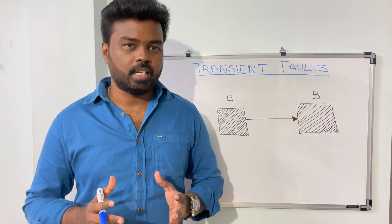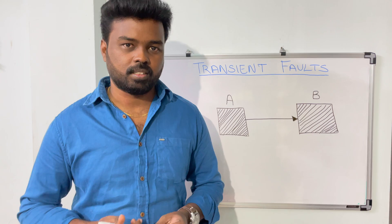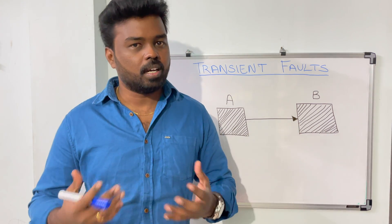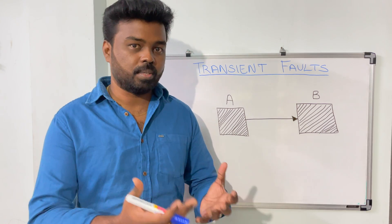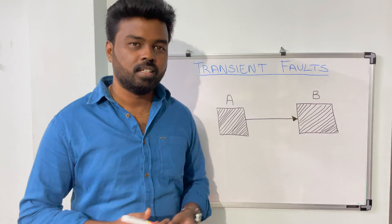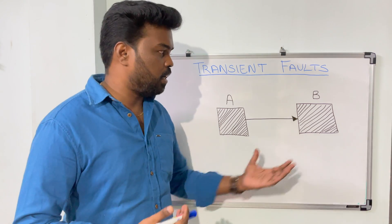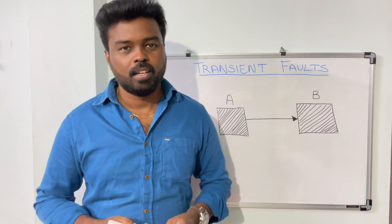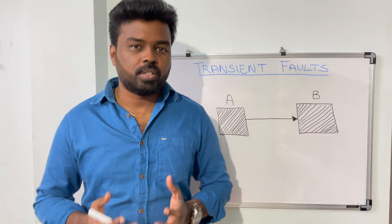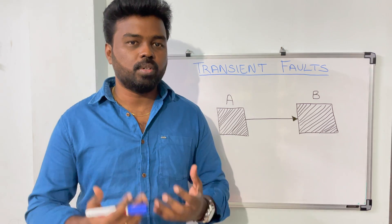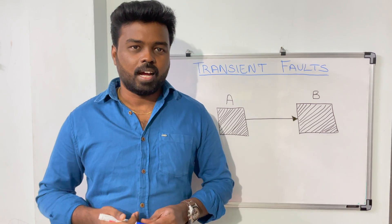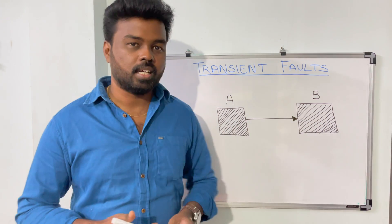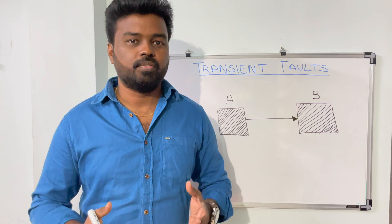We have to keep in mind that we cannot retry all failure responses, because sometimes the failure on the service B side may not be due to a transient fault — it might be a permanent issue. If you keep doing retries in that case, it might make the situation even worse and put your system in danger. So service A, the client, should have the ability to determine whether to do a retry or not, and the developer should have a good understanding of what transient faults are.